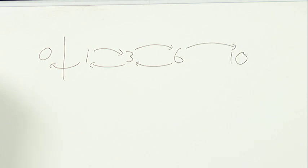OK, let's try to prove that. If you know the formula 1 half n, n plus 1 for the triangular numbers, you can prove it algebraically. But we're going to try to find a geometric proof.